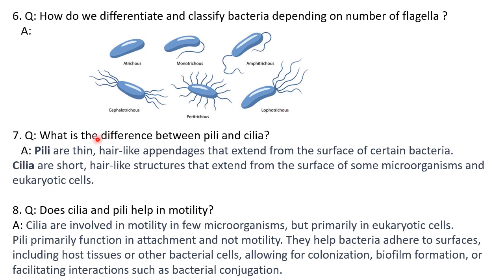What is the difference between pili and cilia? Pili are thin hair-like appendages that extend from the surface of certain bacteria. Cilia are short hair-like structures that extend from the surface of certain microorganisms, but cilia are mainly found in eukaryotic cells. These are different structures — flagella, pili, and cilia should not be confused with each other.